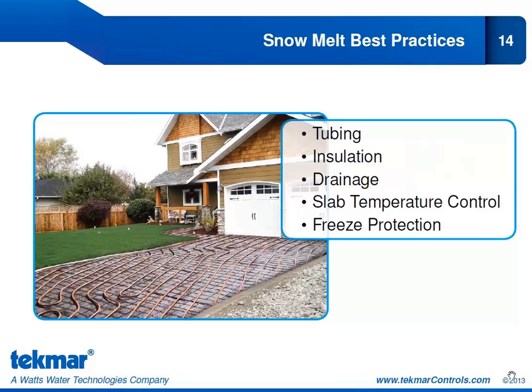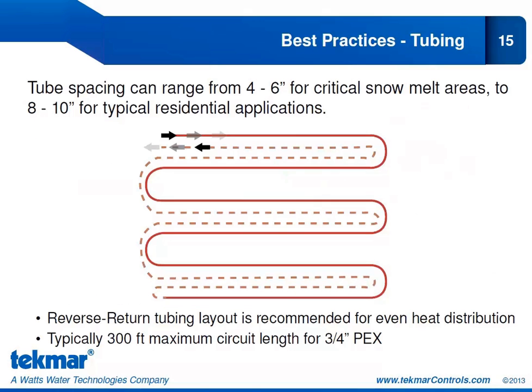Now we'll look at some best practices associated with snow melting, including tubing, insulation, drainage, slab temperature control, and freeze protection. For tubing, tube spacing can range from 4 to 6 inches for critical snow melt areas, to 8 to 10 inches for typical residential applications. A reverse return layout is recommended for even heat distribution. The typical maximum circuit length for 3/4-inch PEX is 300 feet — it's not advised to exceed that.